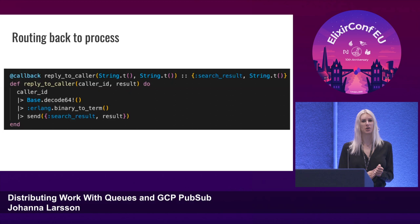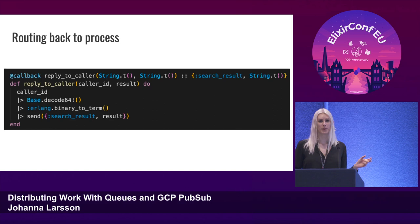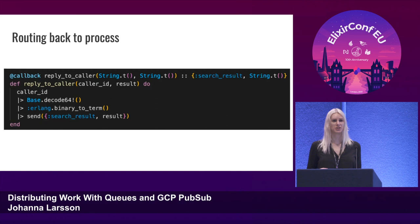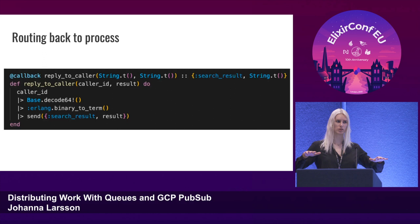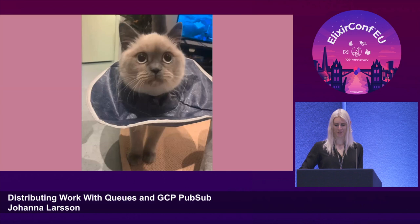Caller ID is the identifier that associates the result with the correct process — it's actually the PID of the process, serialized into ETF, which is Erlang Term Format for serialized Erlang/Elixir data structures. It has to be base64 because ETF is not necessarily valid UTF-8, and JSON needs proper strings. The message metadata is JSON. That's how we have the two levels: the result goes to the correct node via the pod name filter, then to the correct process via the caller ID.